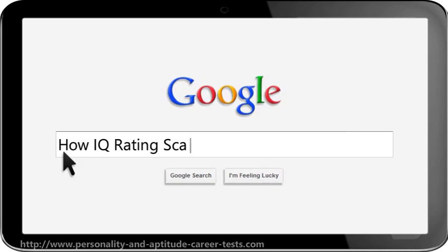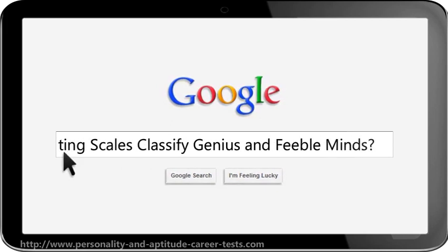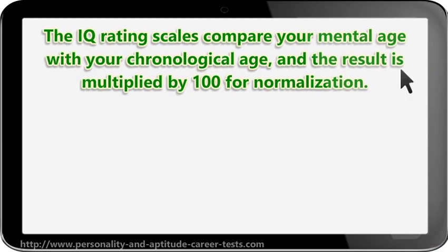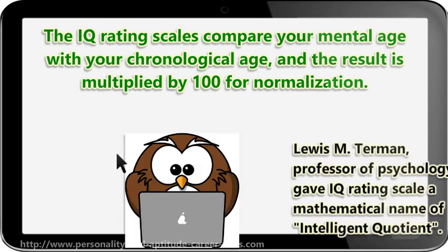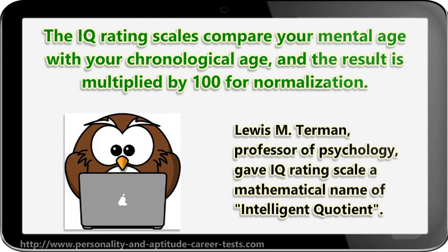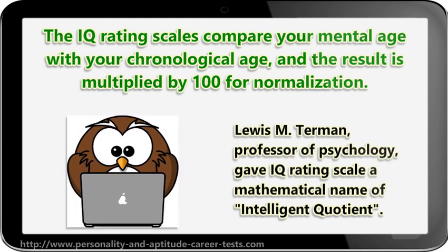The IQ Rating Scales compare your mental age with your chronological age, and the result is multiplied by 100 for normalization. Lewis M. Terman, Professor of Psychology, gave IQ Rating Scale a mathematical name of Intelligent Quotient.